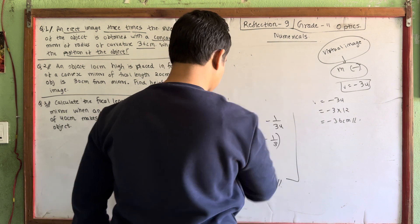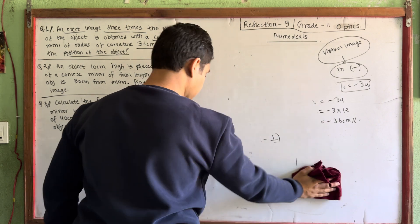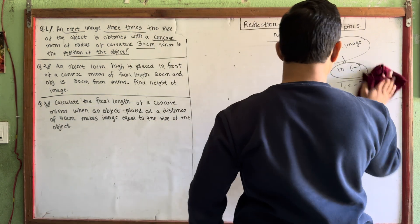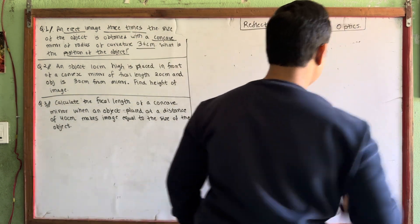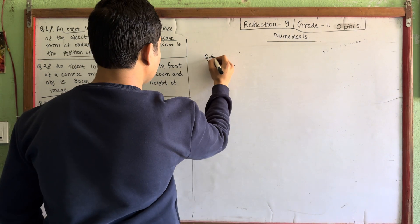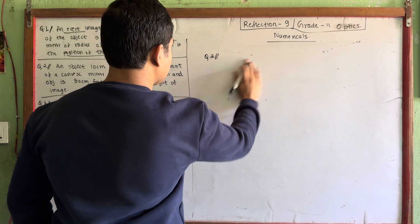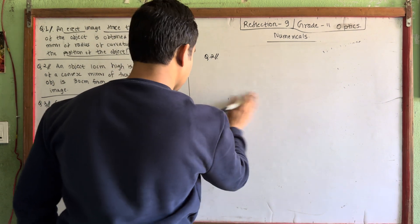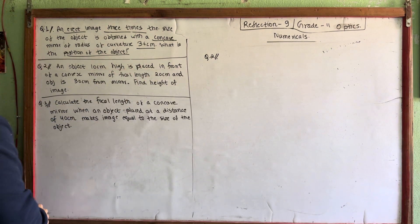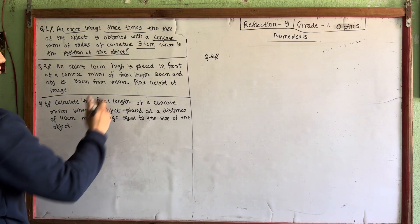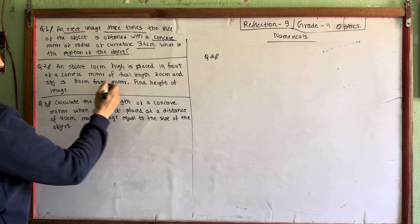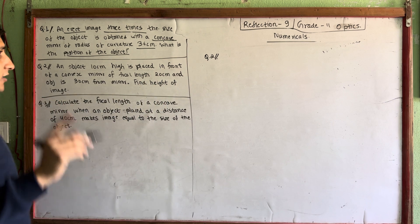This is a simple question and we solved it. Let's move on to the next question. Question number two. An object 10 cm high is placed in front of a convex mirror of focal length 20 cm, and the object is 30 cm from the mirror. Find the height of the image.